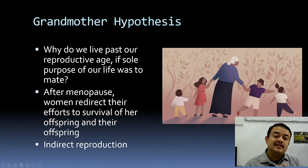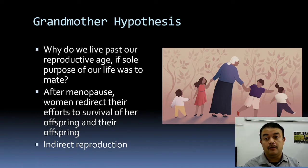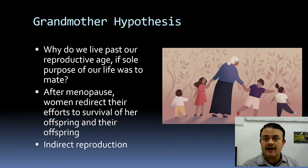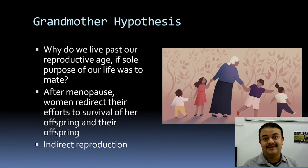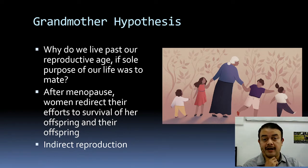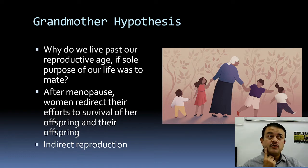Another concept is the grandmother hypothesis. If the sole purpose of human life is to find a mate and reproduce, why do humans live past reproductive age? Most species die shortly after their reproductive age — our closest relative, the chimpanzee, typically lives about 30 years and becomes lethargic afterward.